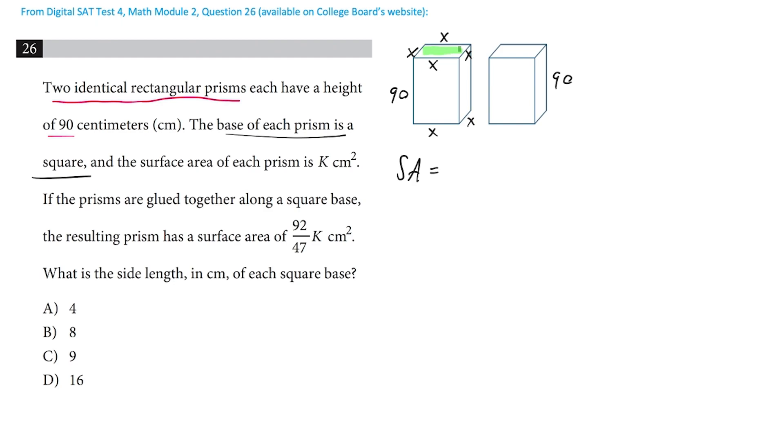So for instance, this green face right here, and the mirror image of it, which is on the bottom of the shape. But each of those have an area that's the base times the height, x times x. So that's x squared, and there are two of them.